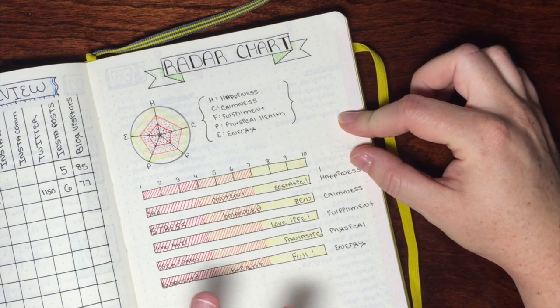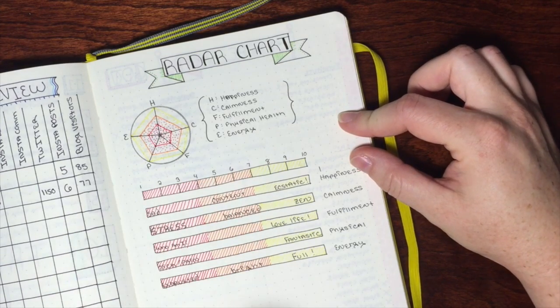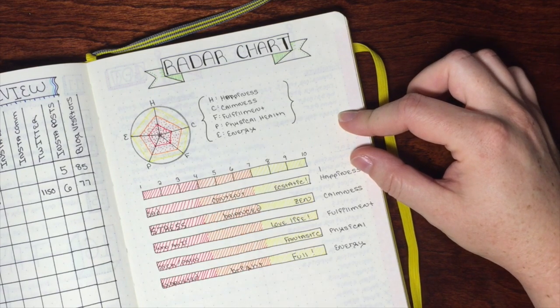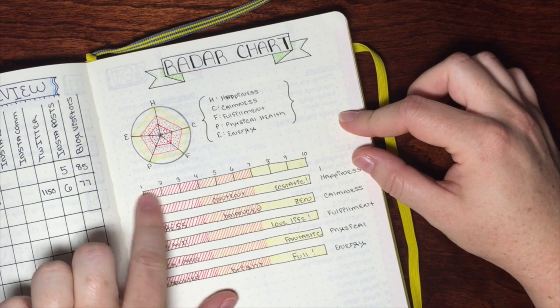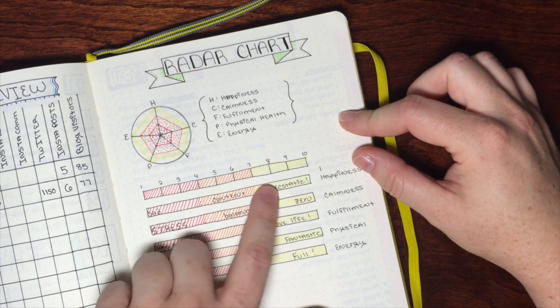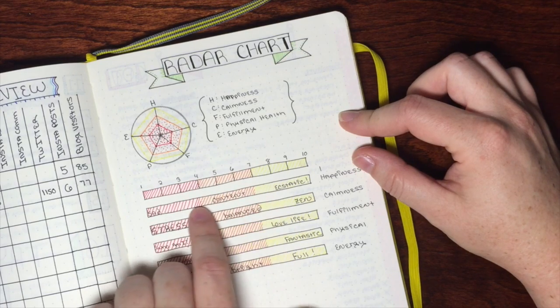If I ever forget, oh am I a 5 happiness today or an 8 happiness today or a 3, this is where I'll come to look to say okay, well a 1 means I'm really sad, something really horrible has happened. Anywhere between a 4 or a 7 is basic contentment.